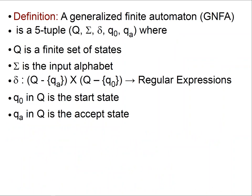Here is the formal definition of a GNFA — a Generalized Finite Automaton. A GNFA is a five-tuple; everything is like before except that you have a unique accept state, and most importantly delta computes regular expressions — it outputs regular expressions for any pair of states. For any pair of states you have regular expression labels, except the start state: the first element in the pair cannot be an accept state and the second coordinate cannot be the start state.